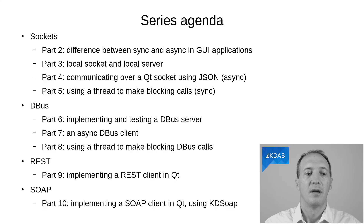REST and SOAP, on the other hand, are mostly used over the web to talk to existing web services — so these are all about TCP. They are built on top of TCP sockets.